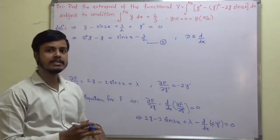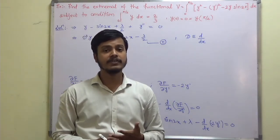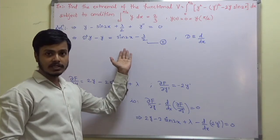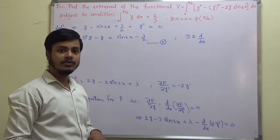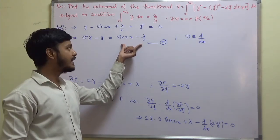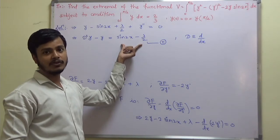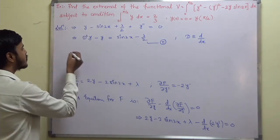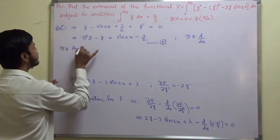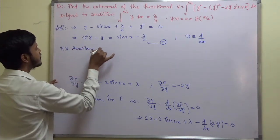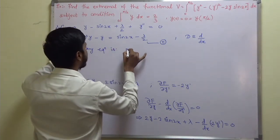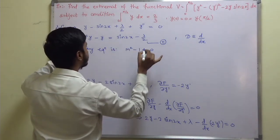Equation 1 is nothing but a higher order ordinary differential equation with constant coefficients. We need to find the complementary function (CF) and, since there is a right-hand side, the particular integral (PI) as well. To find CF, write down the auxiliary equation: m squared minus 1 equals 0.